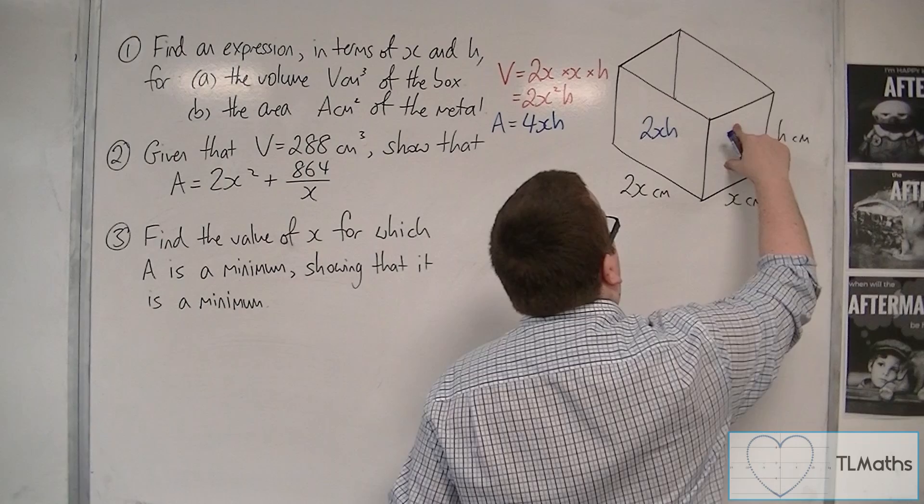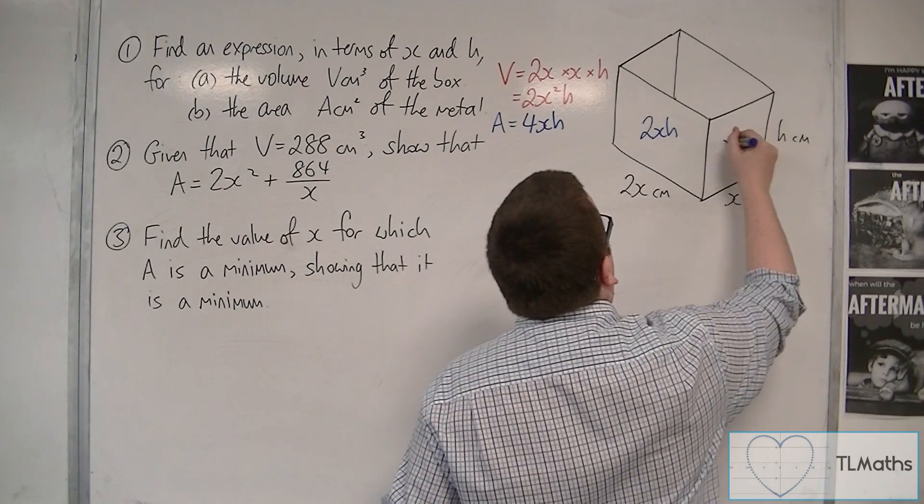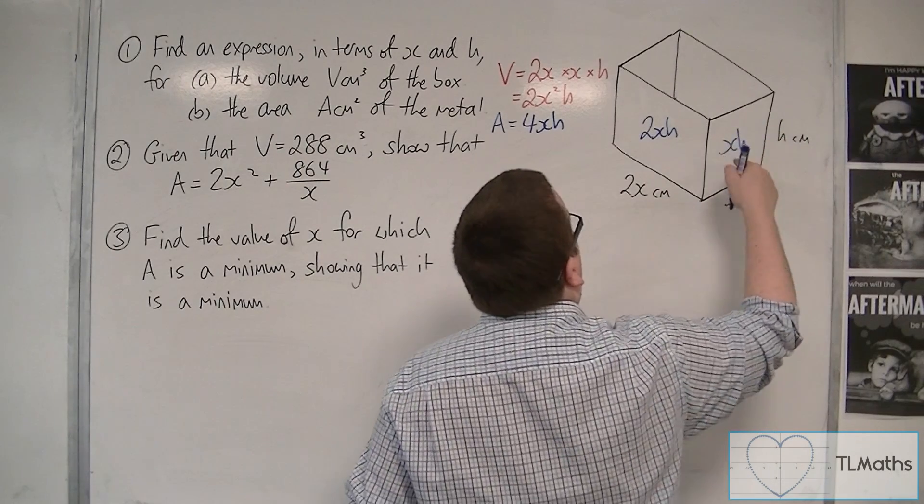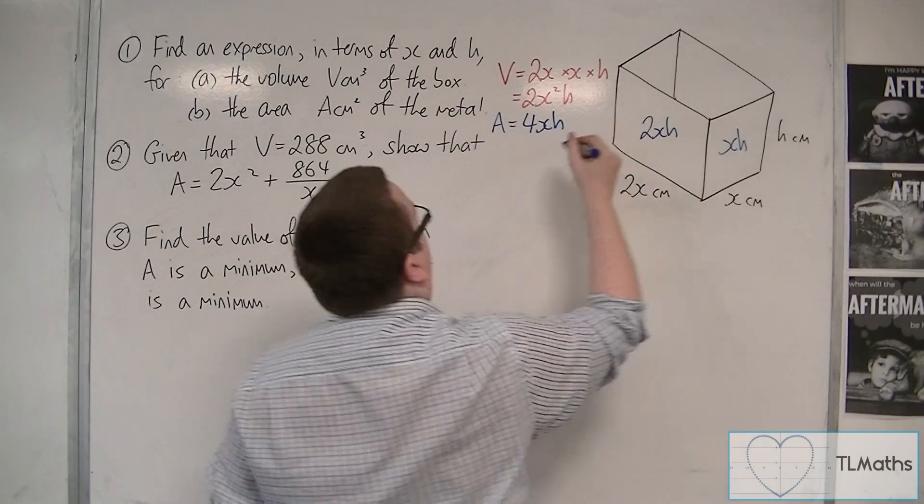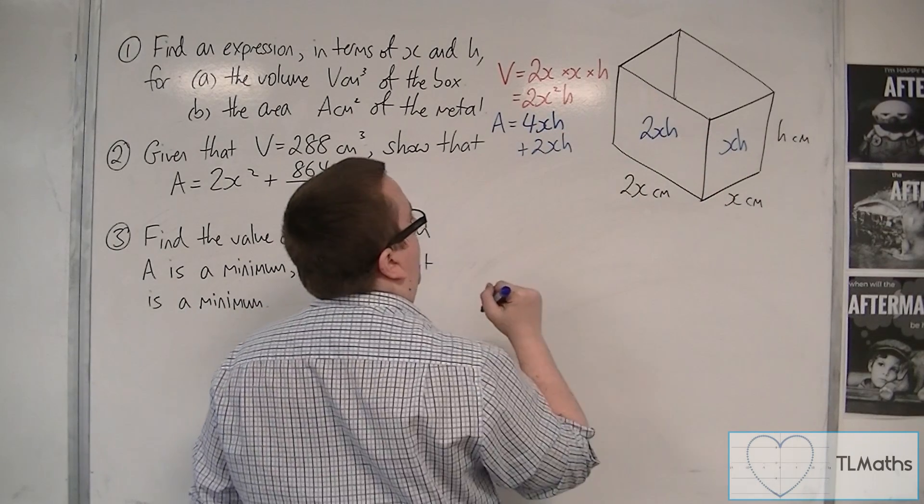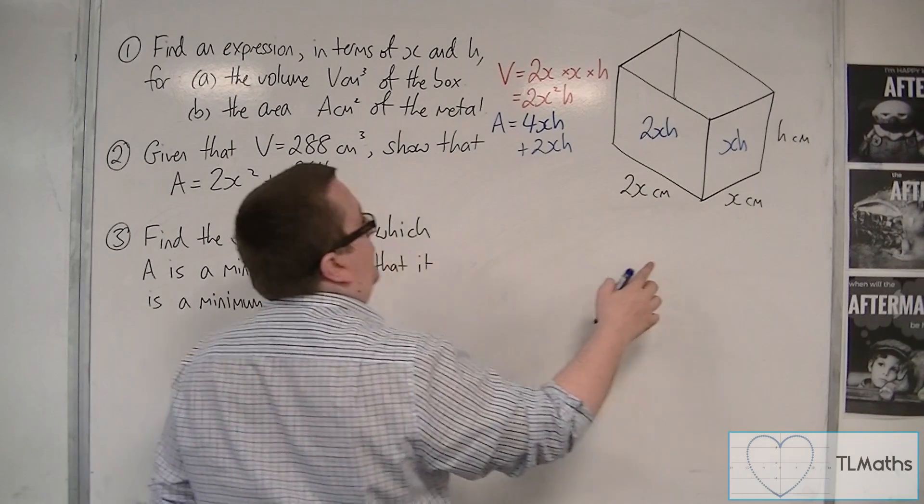We've also got this side here, which is x times h. And we've got 2 of them, because we've got that front one and the back one. So we've got 2 lots of xh.